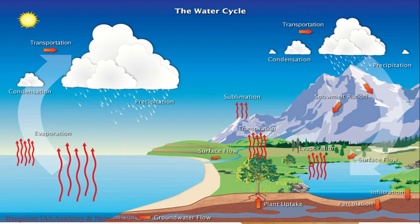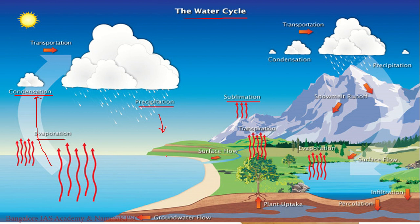The water cycle is driven by the sun's energy. The sun warms the ocean surface, causing water to evaporate and ice to sublime, so water in the form of water vapour enters into the atmosphere. Over time, water vapour in the atmosphere condenses into clouds and eventually comes down in the form of precipitation.